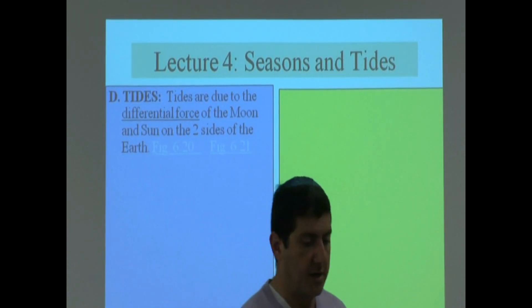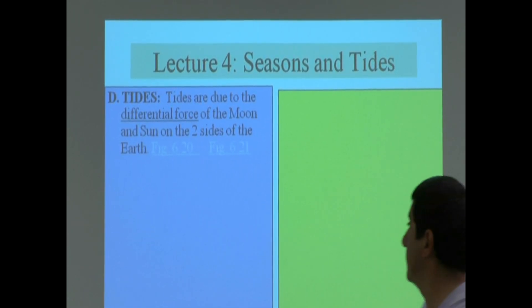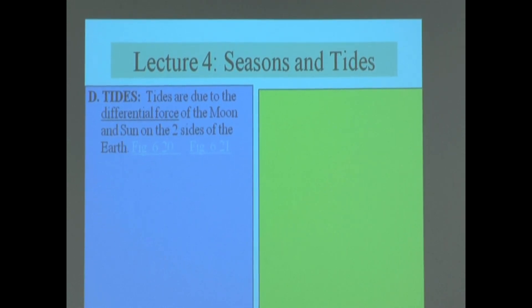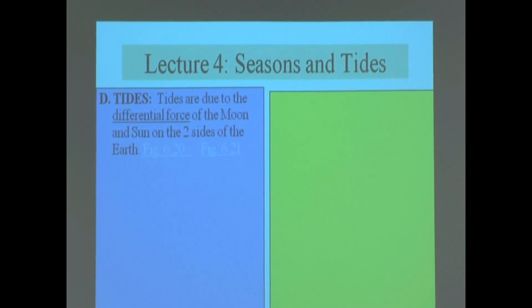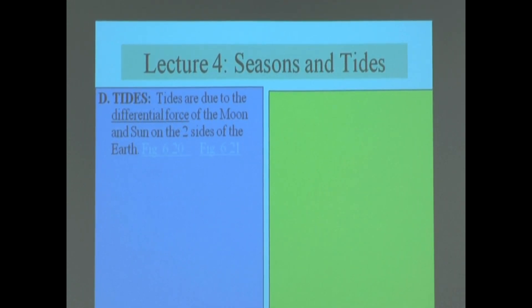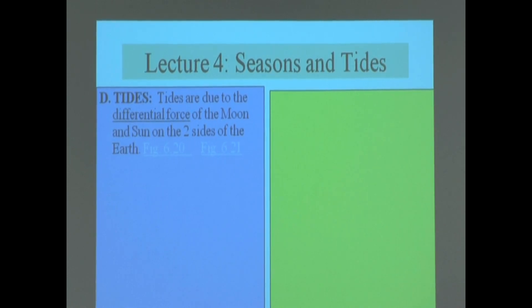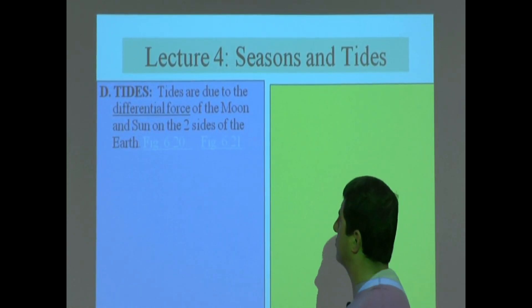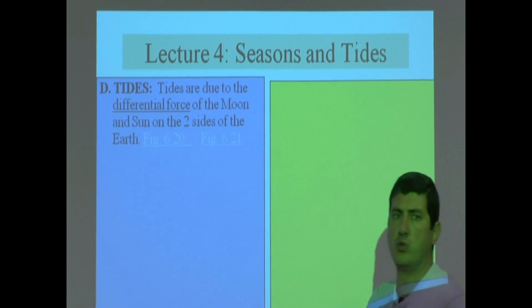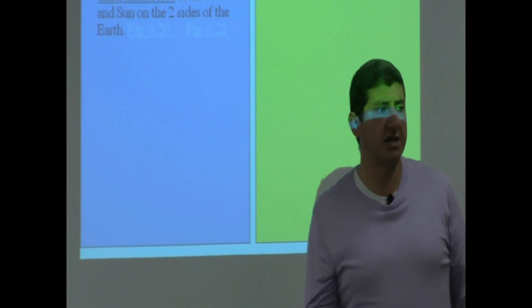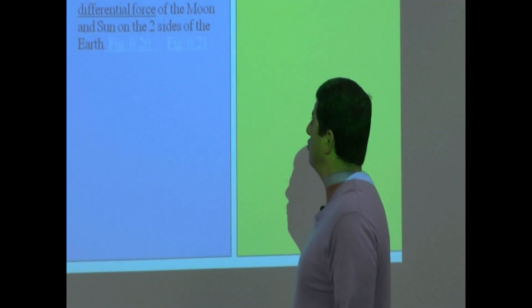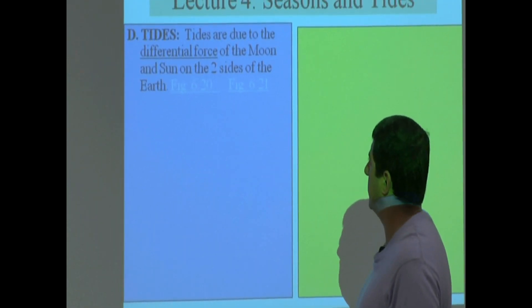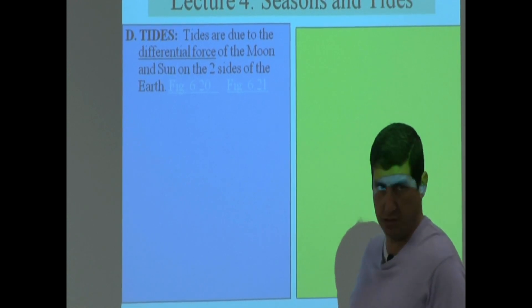So now we get to tides. We left off here last time. This is the last portion of this lecture tied with seasons and eclipses and so on. So we talk about tides. What are tides? How are they caused? What causes them? Why do they happen? Tides are due to the differential force of the moon and the sun on the two sides of the earth.